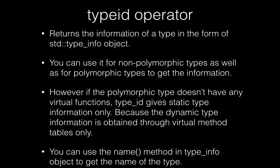Now let's look at typeid. It is an operator which returns information in the form of a type_info object. You can use typeid for non-polymorphic types as well as polymorphic types with virtual functions. However, if you use it for polymorphic types without virtual functions, you will get only static type information — the compile-time information. To get dynamic type information, your class must have virtual methods.